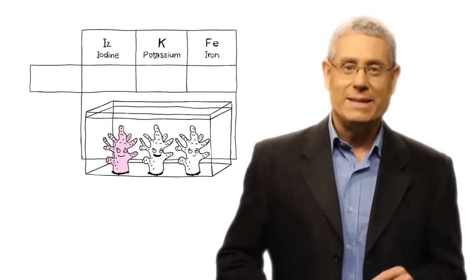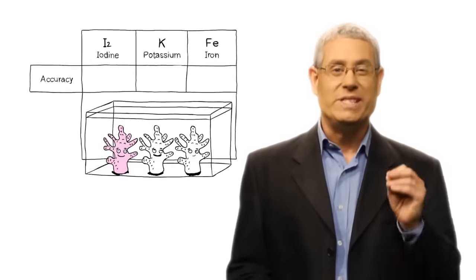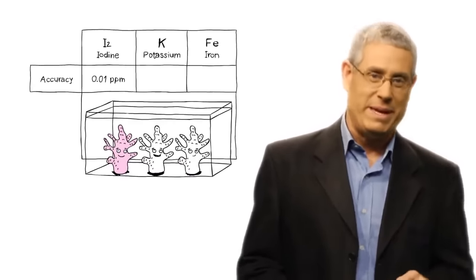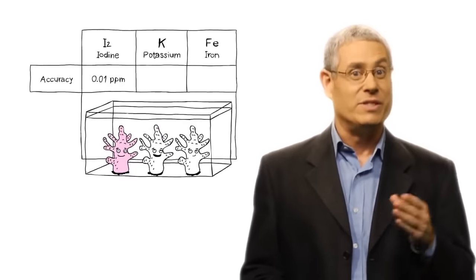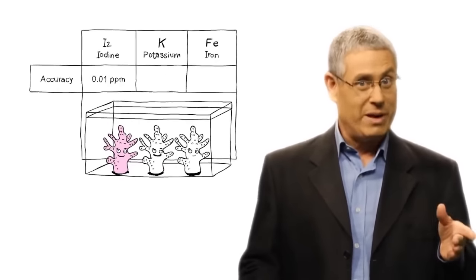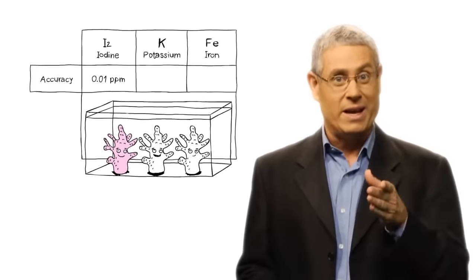The unique iodine test has a true accuracy of 0.01 ppm. This is very significant when maintaining an iodine level of 0.06 and where levels of above 0.09 are toxic.